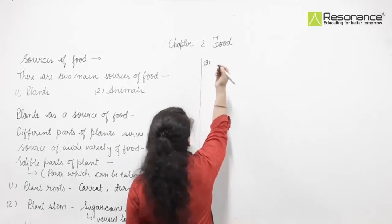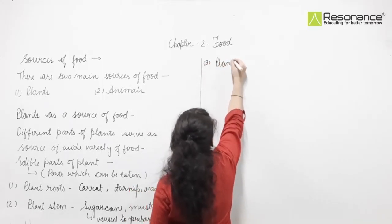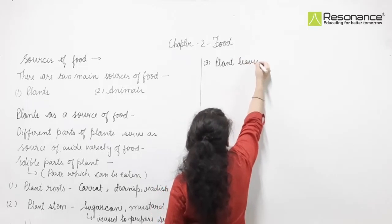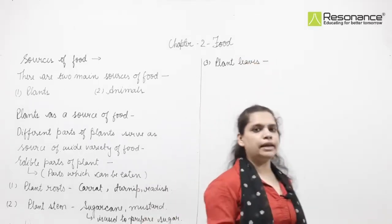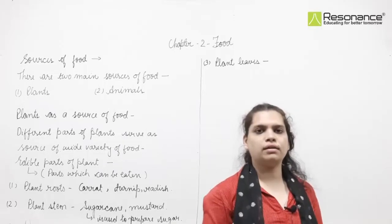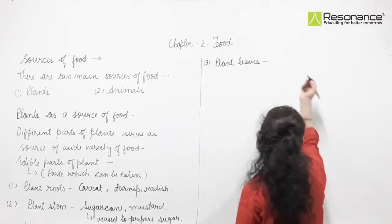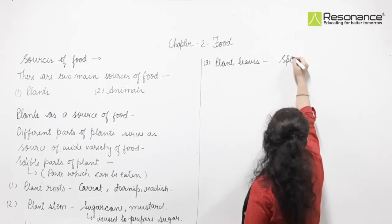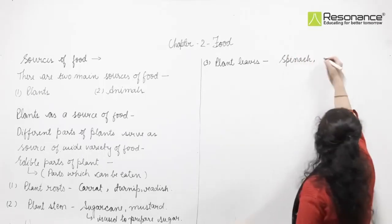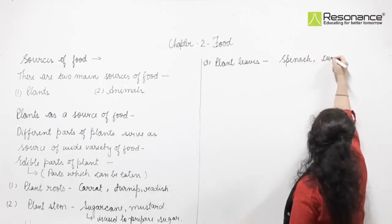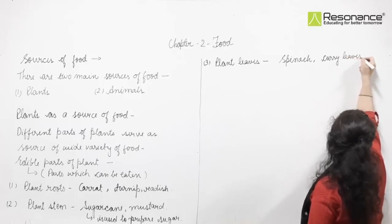Third are plant leaves. There are some plants whose leaves we consume as food, for example spinach, curry leaves, and cabbage.